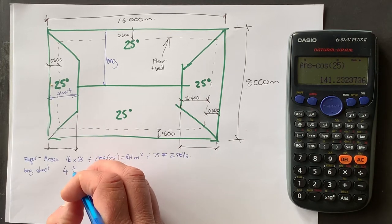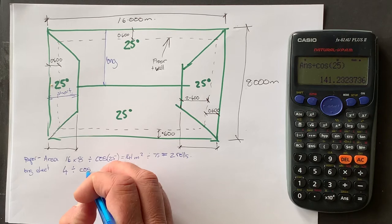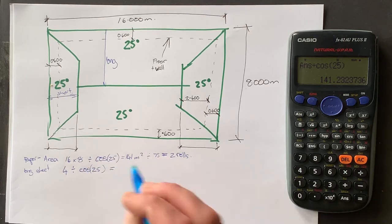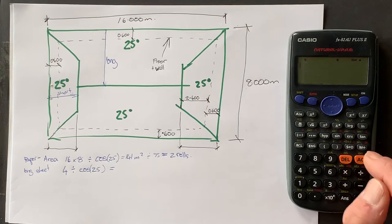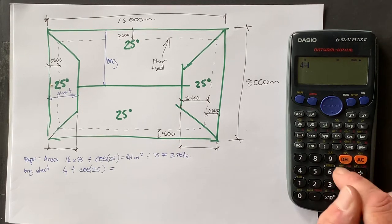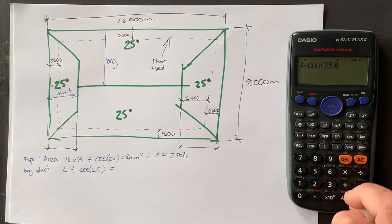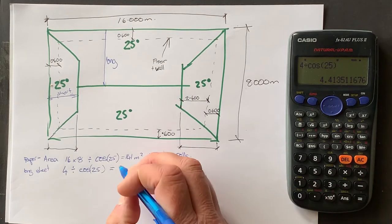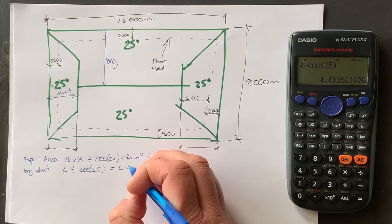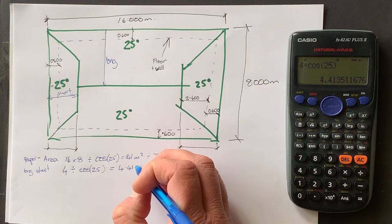And we divide that by cosine of the pitch, which will be 25. And that equals, so if we say four divided by cosine 25 equals 4.414 meters.